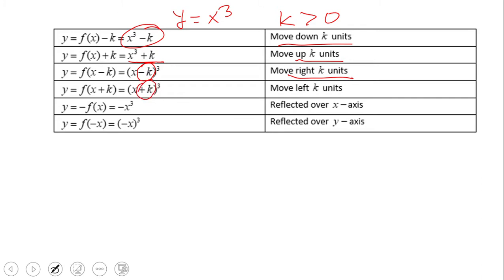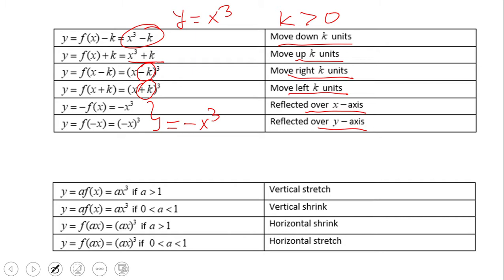If we add inside the parentheses, the graph moves left. We also look at reflecting over the x-axis and reflecting over the y-axis. For y equals x cubed, those two reflections are actually the same — the equation simplifies to negative x cubed. These are called rigid transformations because they don't change the shape of the graph.